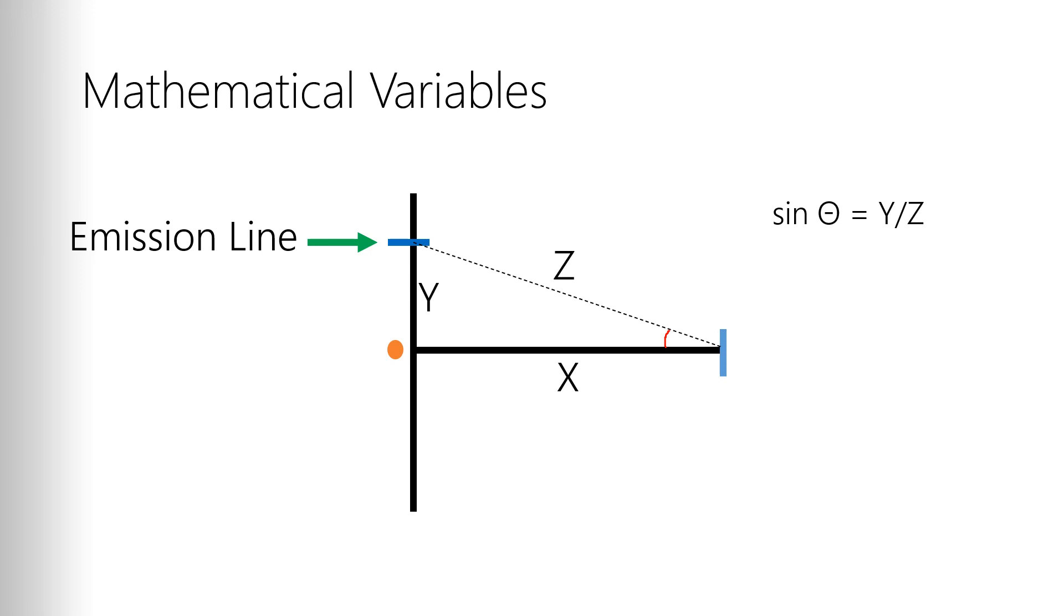So y, which is the opposite side to that angle, over z, which is the hypotenuse. So using sine theta and the constant for how many lines you have in your diffraction grate, which is 5360, you're able to calculate the wavelength of light for that particular emission spectra. And you're going to do this for the multiple wavelengths that you have data in your table for.